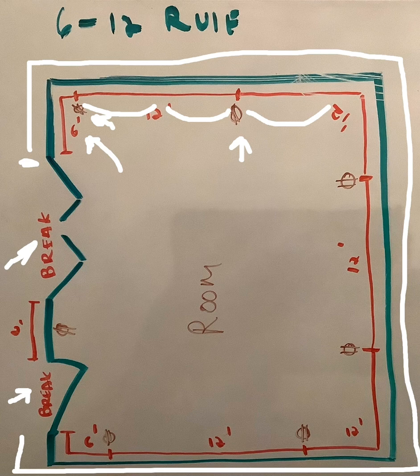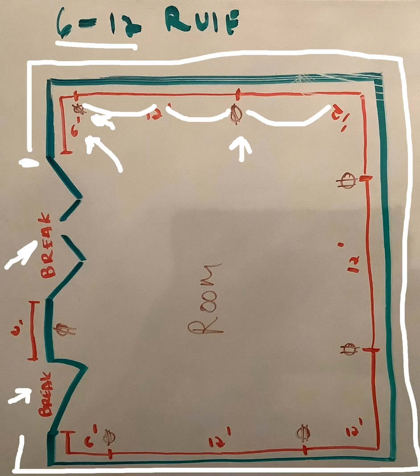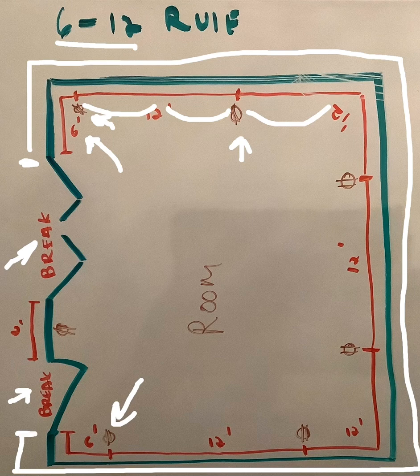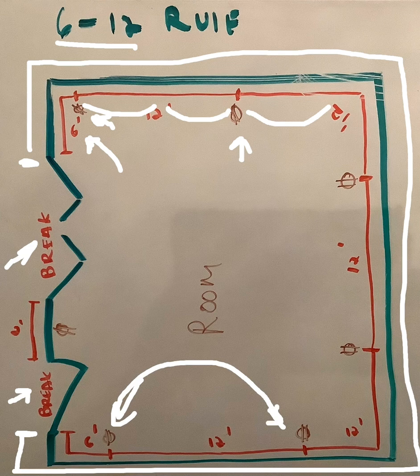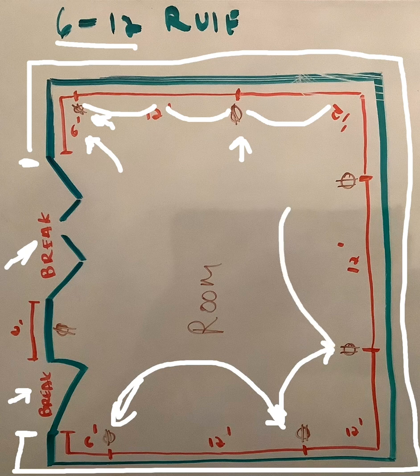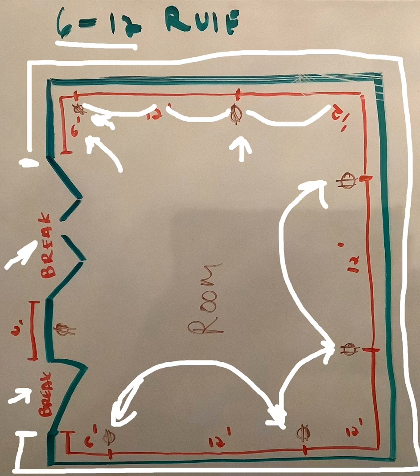To make it simple, we use what's called the 6-12 rule. Each outlet begins within six feet of the edge of a door frame or a break. Then no outlet shall extend beyond 12 feet from the last. And that measurement shall carry around the room as long as it is unbroken by any breaks.